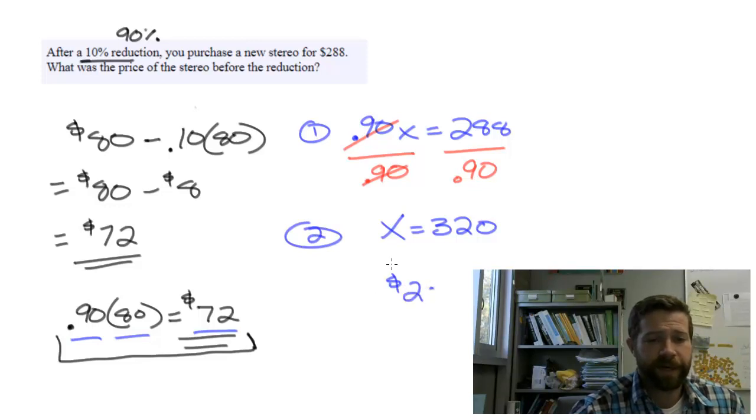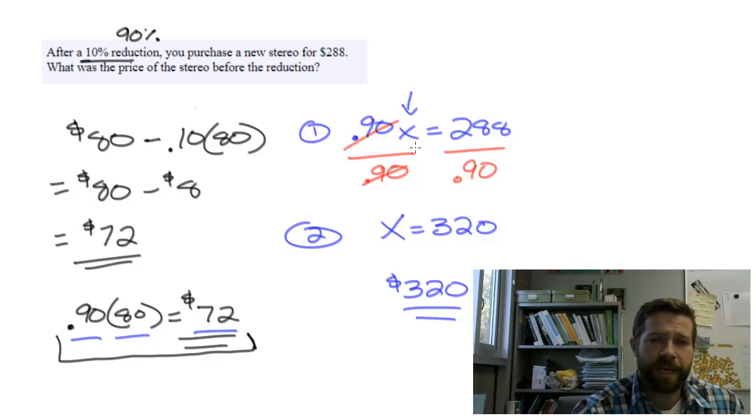You could always verify this by multiplying 320 by 90% to make sure you did it right. This is the number that would be input for x to make this equation true, meaning that 90% of 320 is 288.